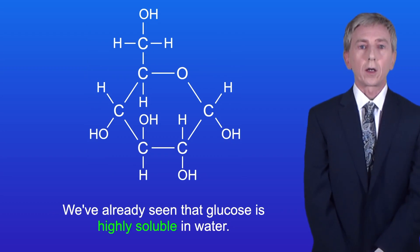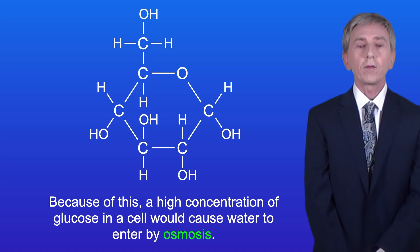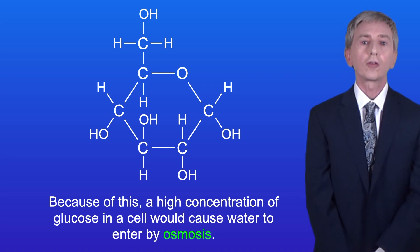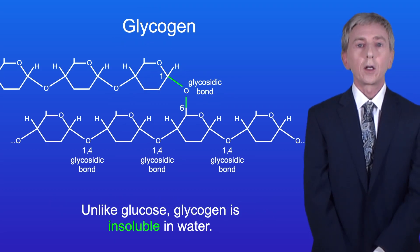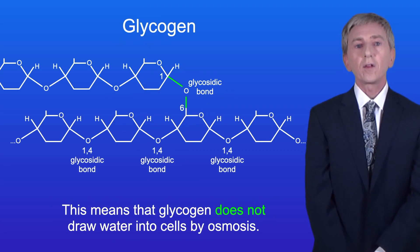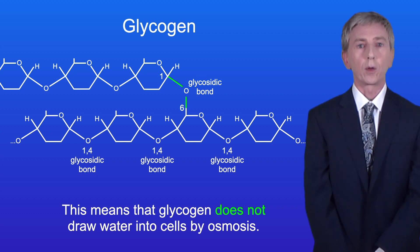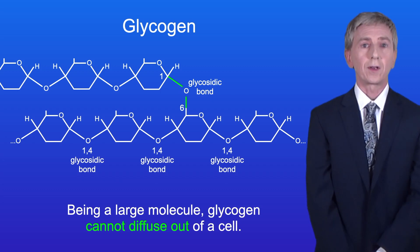We've already seen that glucose is highly soluble in water, and because of this a high concentration of glucose in a cell would cause water to enter by osmosis. Unlike glucose, glycogen is insoluble in water, and this means that glycogen does not draw water into cells by osmosis. And being a large molecule, glycogen cannot diffuse out of a cell.